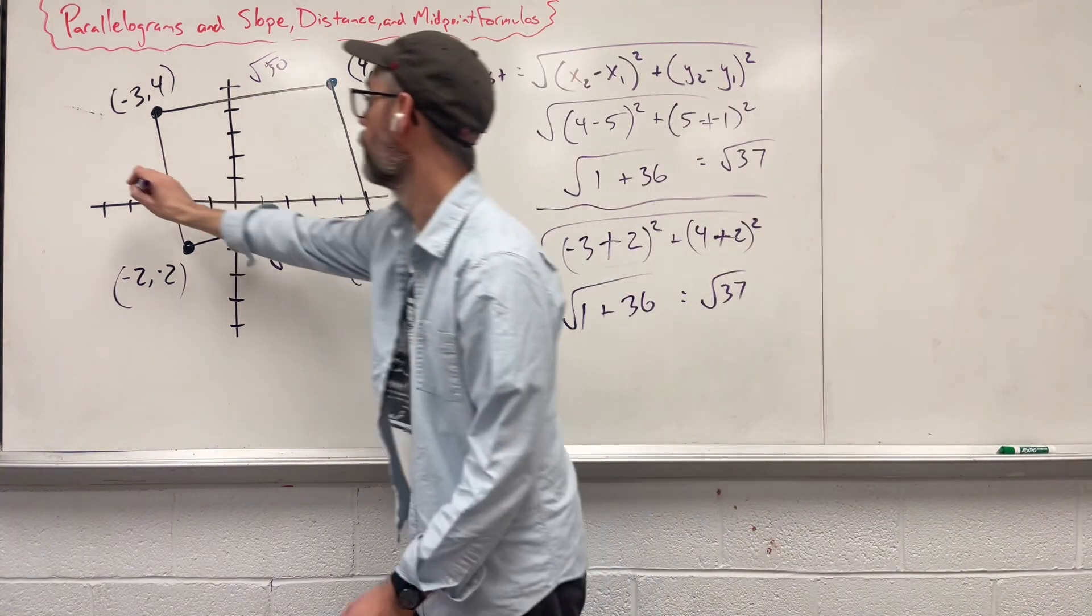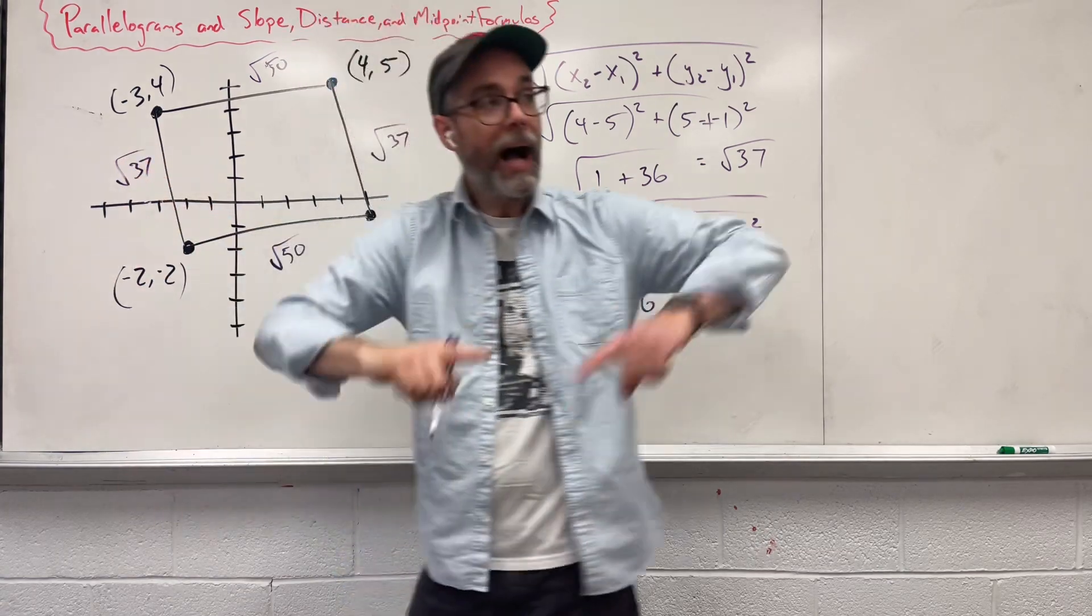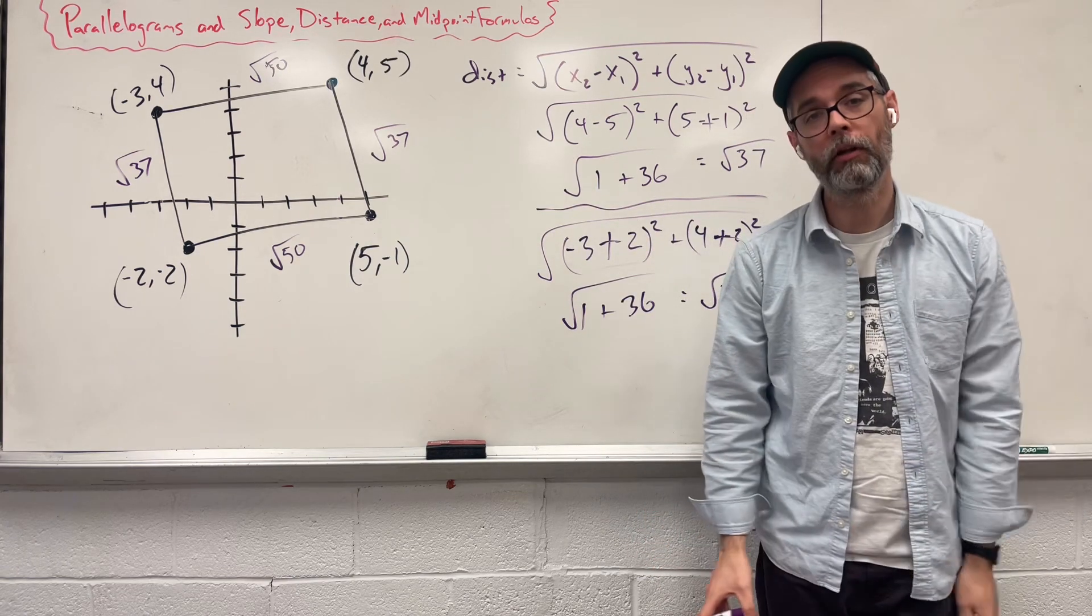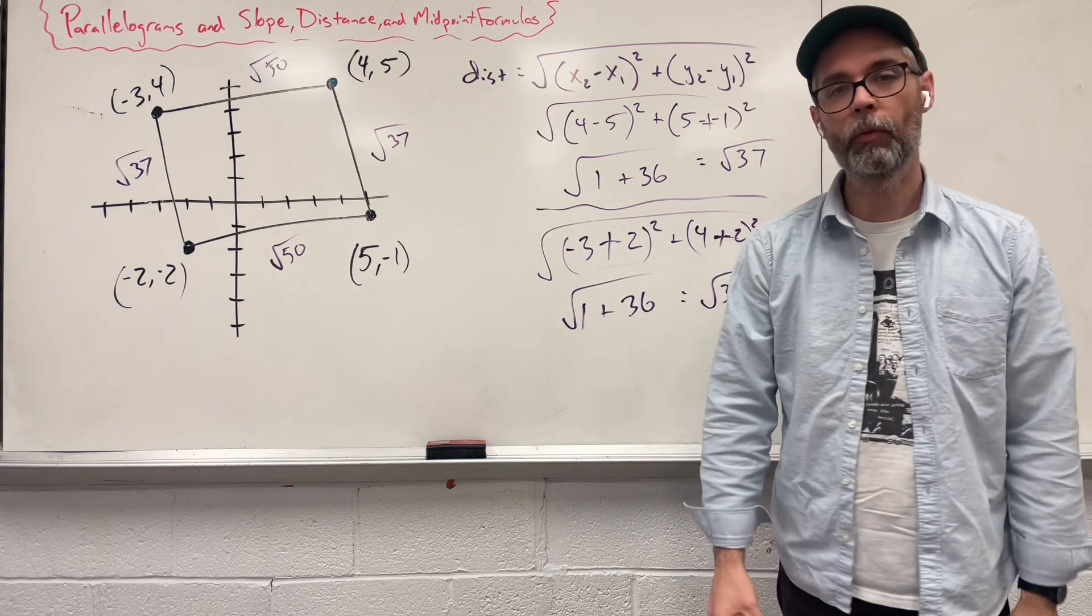Which those two things match up. Now, because opposite sides are the same, they are congruent to each other, we in fact have a parallelogram, and we used the distance formula to help get there.